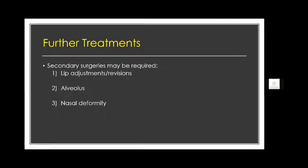If everything goes well, some secondary surgeries may still be required. If there was a notch or asymmetry, some lip revision may be required down the line. For those with involvement of the alveolus, some alveolar bone graft may be required later. Nasal deformity, especially if severe, may also need to be corrected down the line. But those aspects are outside the scope of our talk for today.